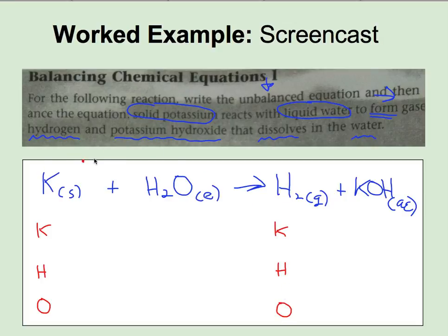And let's just go through and count. We have one potassium on the left and one potassium on the right. Here we have two hydrogens on the left and, be careful, three hydrogens on the right. And one oxygen on the left and one oxygen on the right. So upon inspection, you can tell that this reaction is not balanced with the hydrogens.